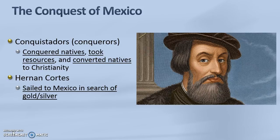First let's start with the conquest of Mexico. Conquistadors, or conquerors, are the Spanish representatives who came to the Americas and conquered the natives, took their resources, and sometimes converted them to Christianity. They come initially from Spain and they are trying to expand Catholicism, so a lot of the missionaries as part of the Counter-Reformation are trying to convert native people into Catholicism.